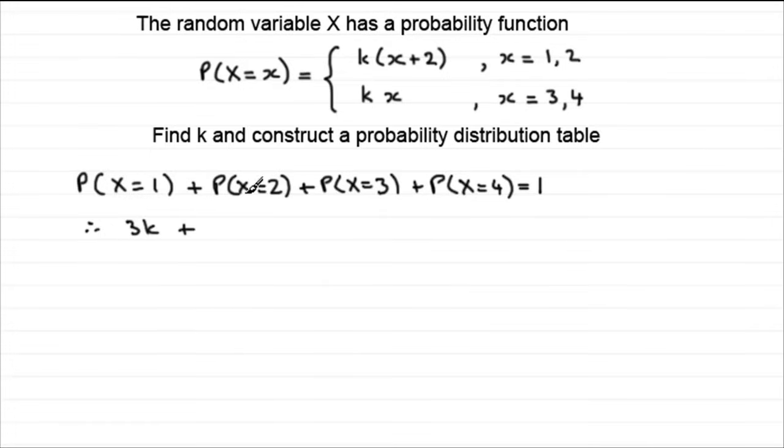And if we do the same for when x is two, put the two in, we get two and two is four, four k. But now, when we have x is three, we've got to move on to this particular line. When x is three, it's going to be three k again. And the probability when x is four, put four in, we get four k. And it should equal one. Add this all up, and what we have is 14k equals one. And divide both sides by 14, and you get that k equals one fourteenth.